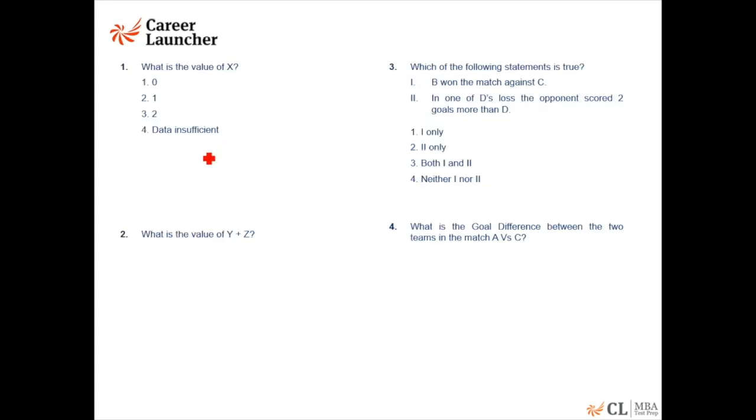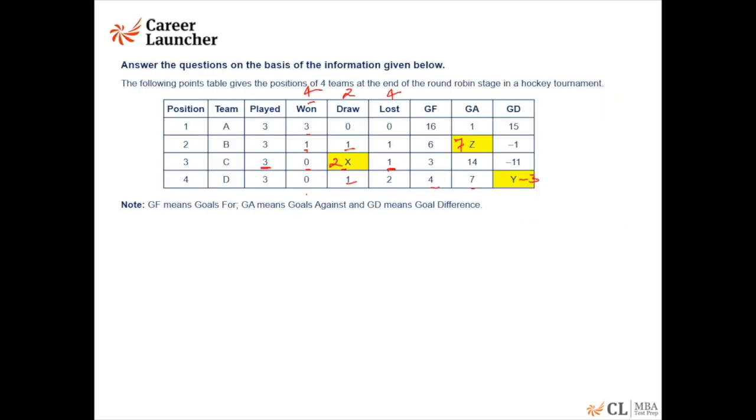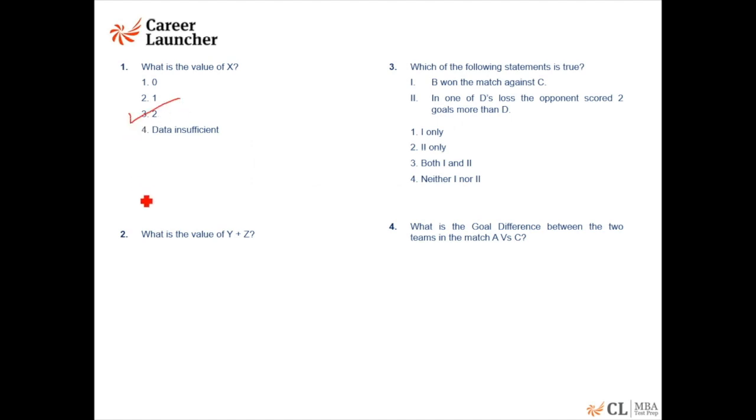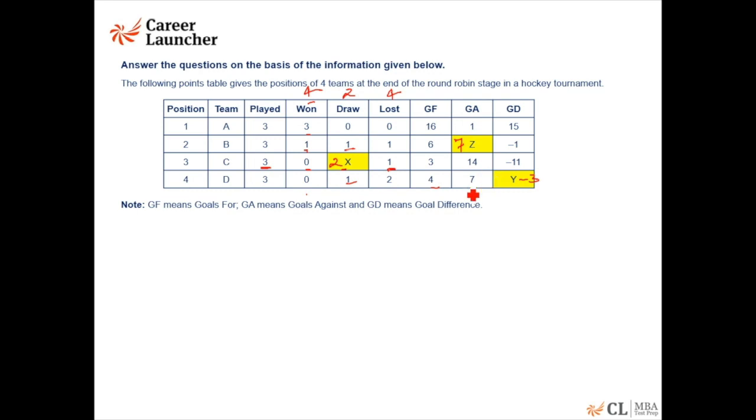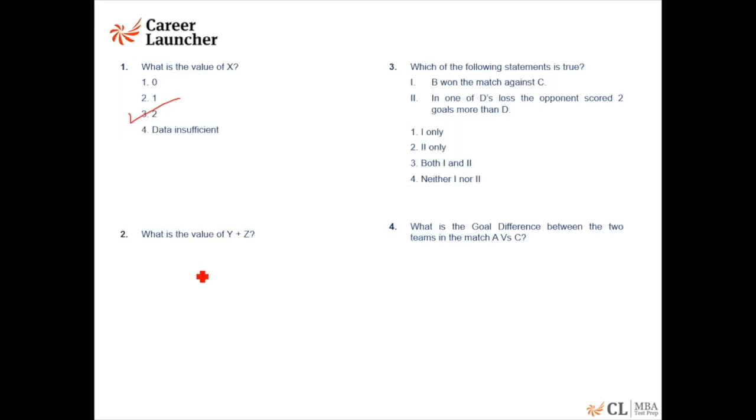Quickly going to the question. What is the value of x? Well, value of x is 2, question choice 3. What is the value of y plus z? y plus z is minus 3 plus 7, so minus 3 plus 7 equal to 4. Very simple question.